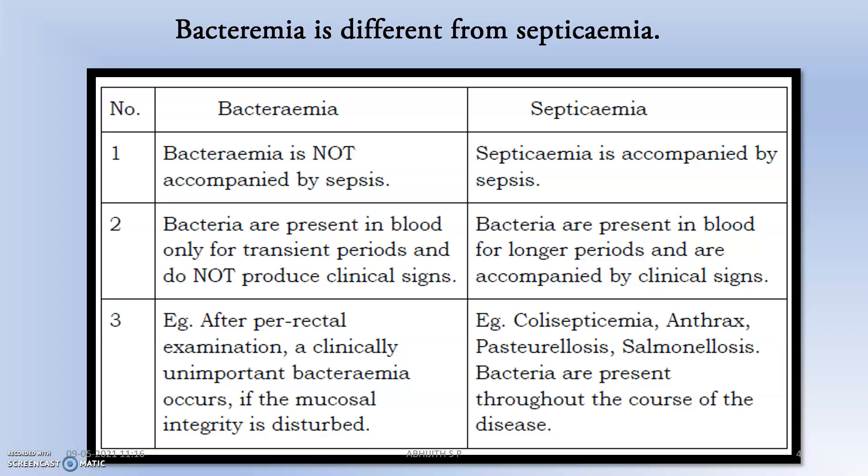An example of bacteremia: after a rectal examination, a clinically unimportant bacteremia occurs if the mucosal integrity is disturbed. In contrast, in septicemia — such as in anthrax, pasteurellosis, and salmonellosis — bacteria are present throughout the course of the disease and induce septic shock, which can even lead to death.